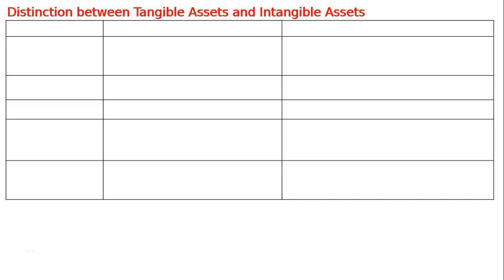This is the distinction between tangible assets and intangible assets. We will be drawing three columns. The first column will be for basis, the second one is for tangible assets, and the third one is for intangible assets. On the basis of each basis, we will be showing the distinction between the two.